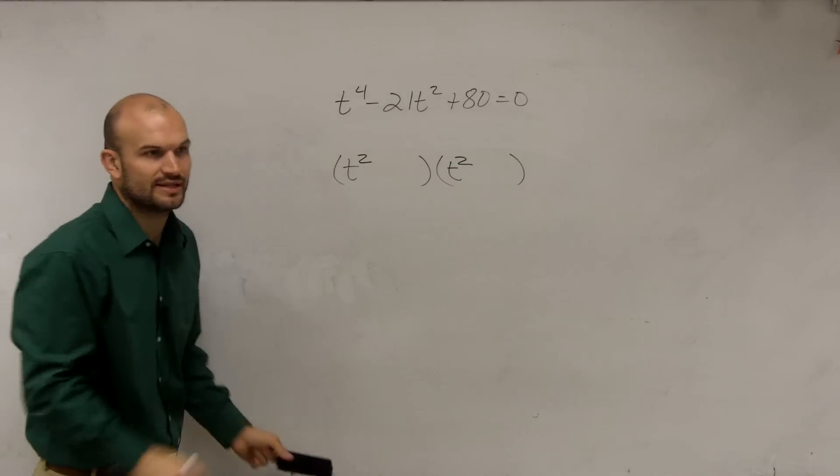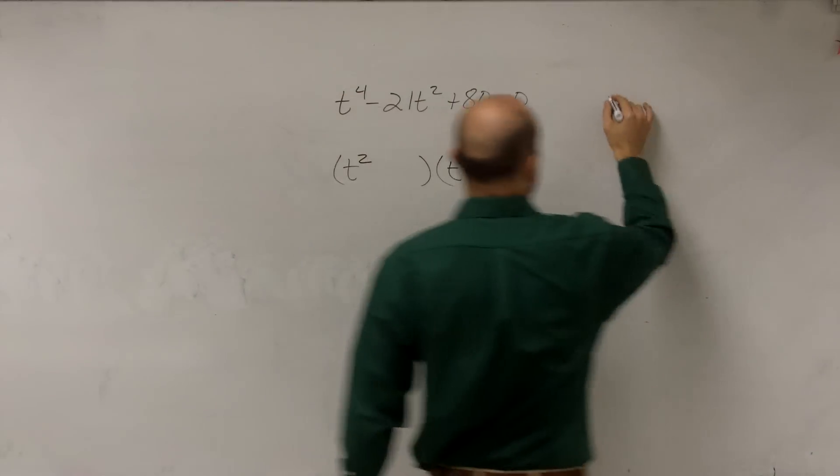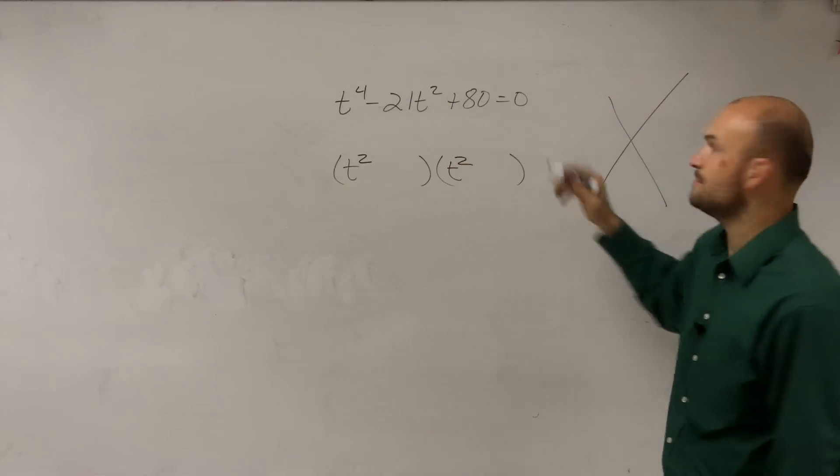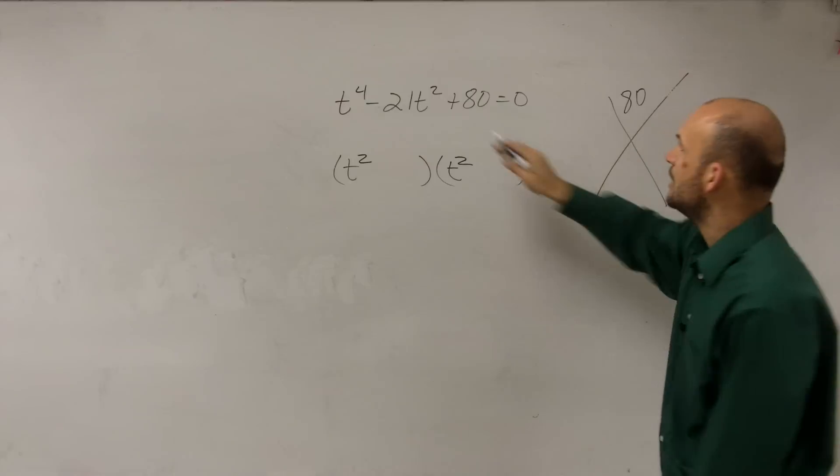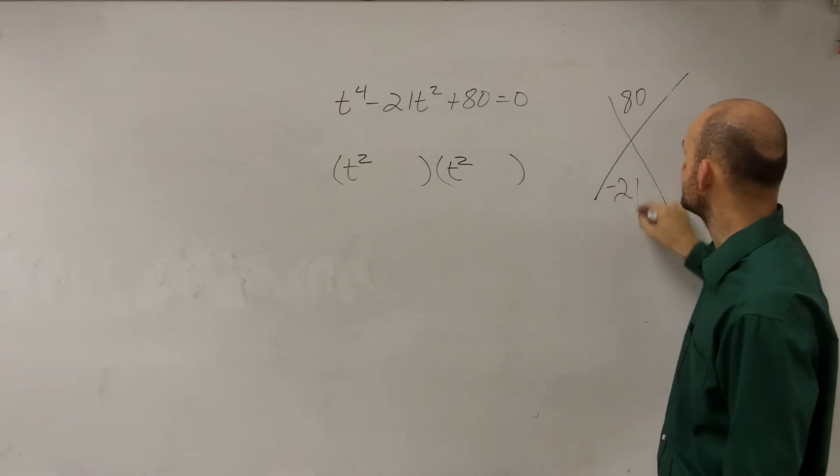So how do we go about factoring this? Well, the same way we can go about factoring all of our problems to solve it. We take our a times c, which in this case is 80, and then we take our b, which in this case is negative 21.